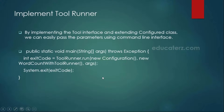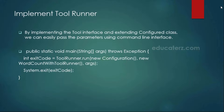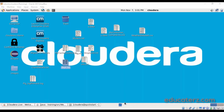In this WordCount with ToolRunner class, we need to write the entire code, but that code has to be under the run method — you have to override this particular run method. The rest of the code, like creating the job objects, configuration objects, mapper class, and reducer class, does not change at all. Let me log into the Cloudera QuickStart VM and create a class to show you the execution.